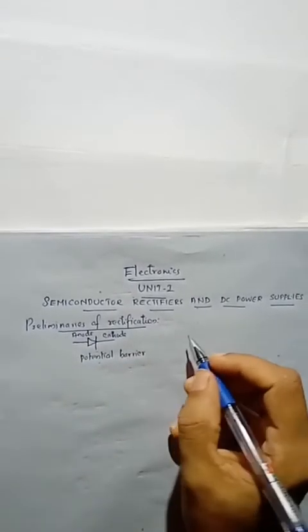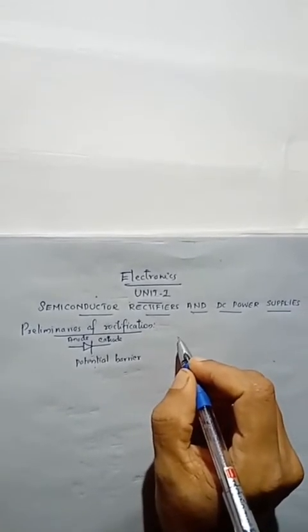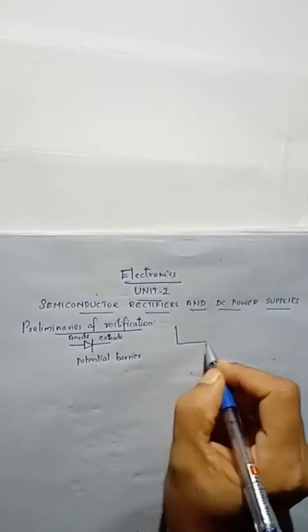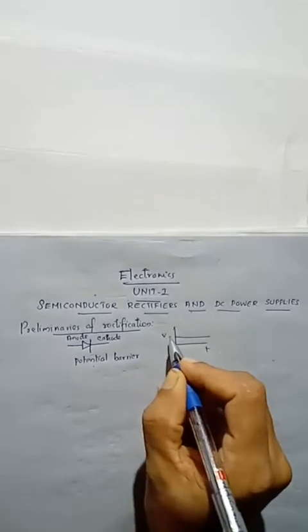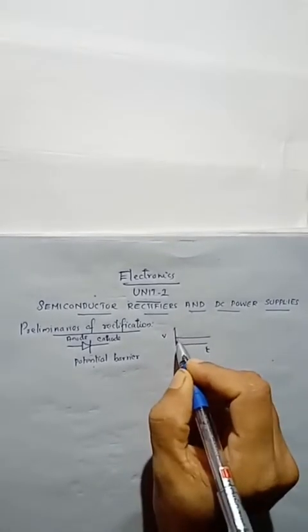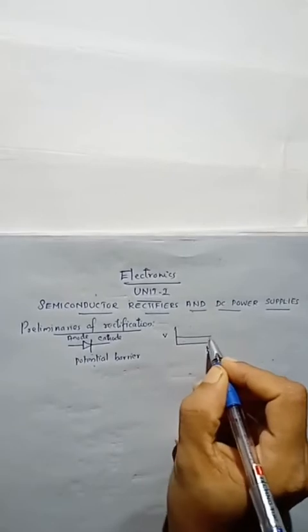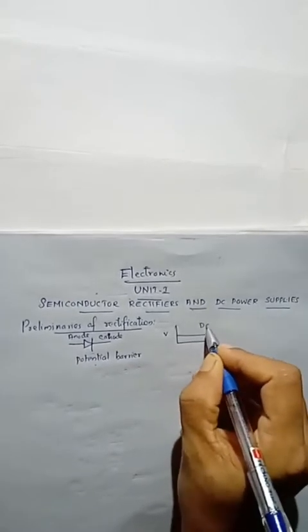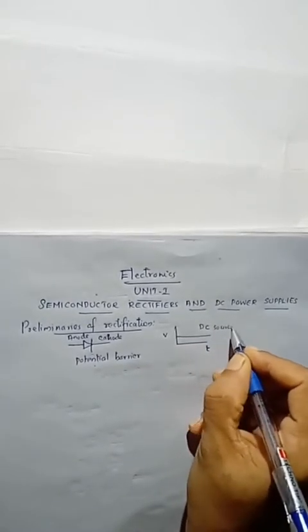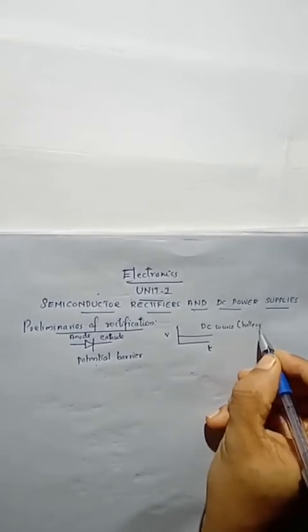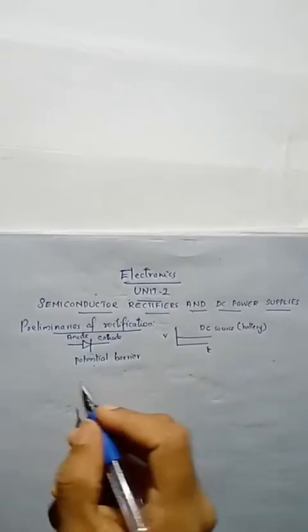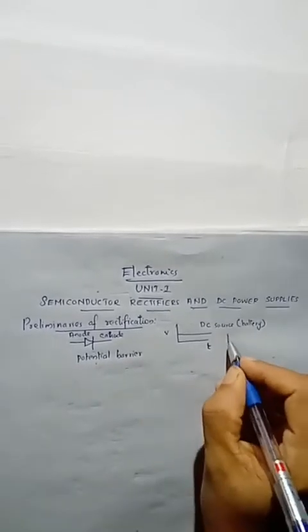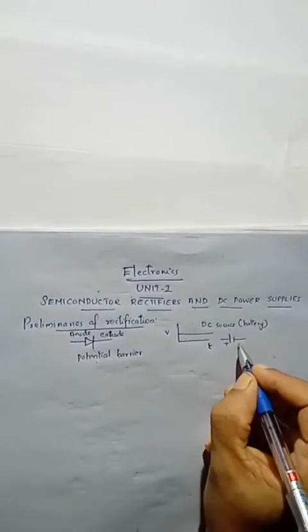In order to conduct current through the PN junction diode, we have to connect an external supply — an external battery. Suppose it is a DC battery. The voltage variation along with time will be constant, that is, as time varies there is no change in the voltage. This is the case of a DC source. Usually a battery is a DC source; there is no variation in voltage with respect to time.